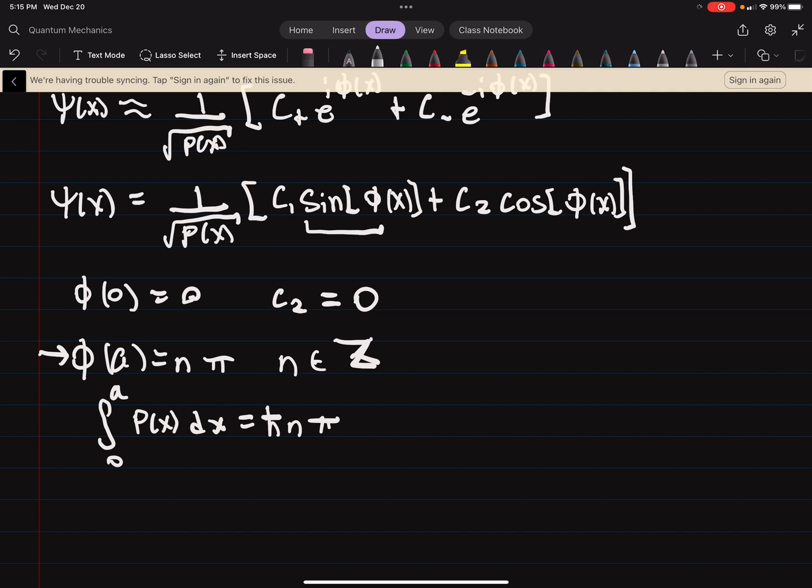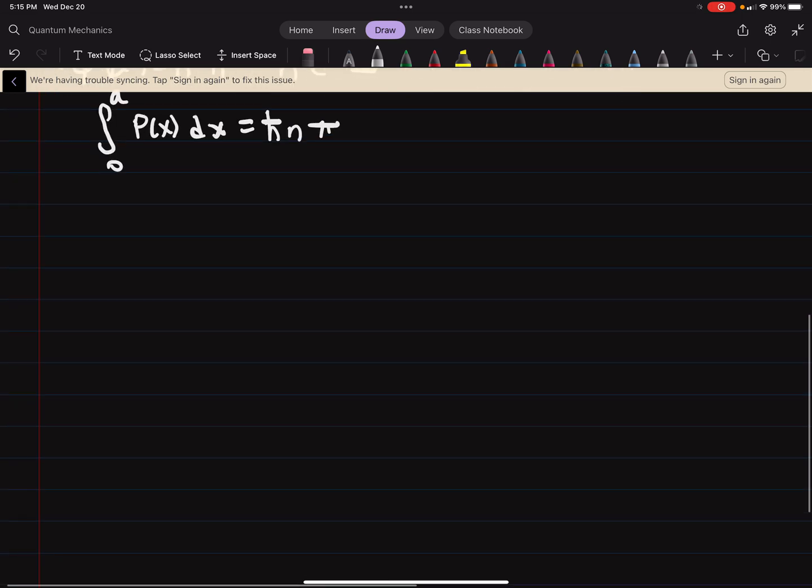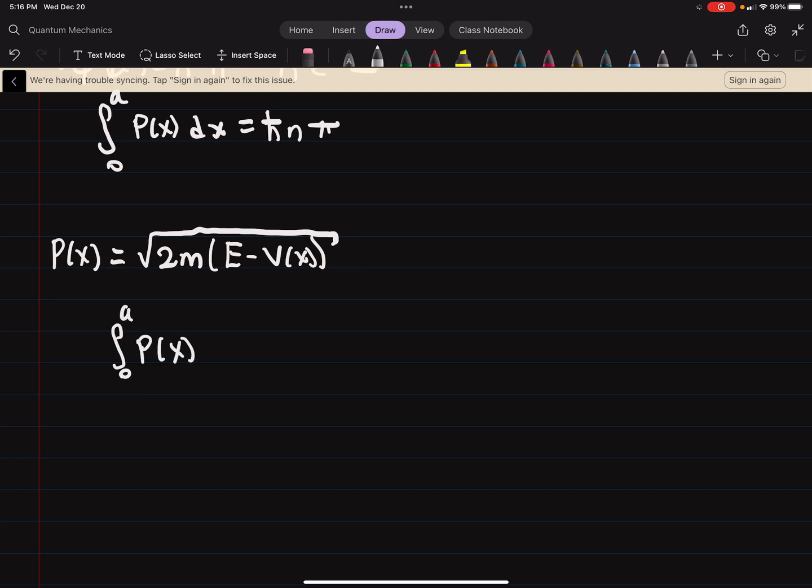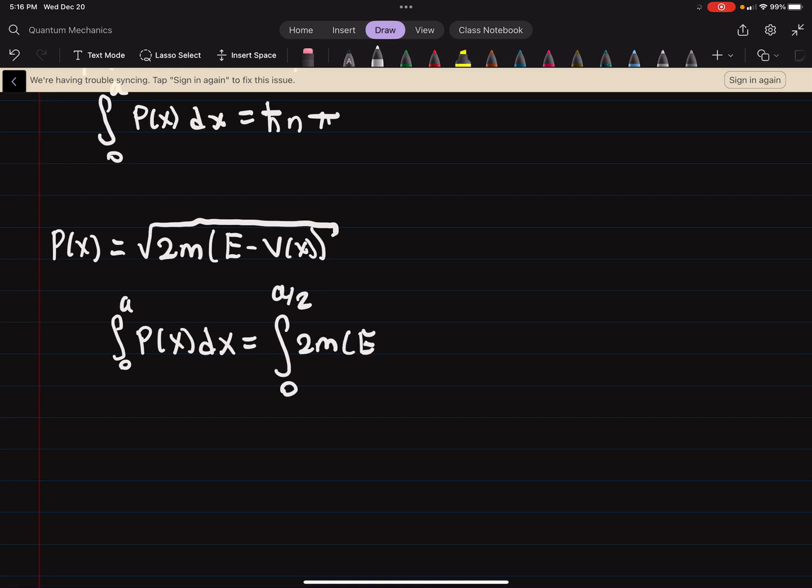A lot of this was explained in example 9.1, I just wanted to talk about it because we're now going to apply it to problem 9.1. P(x) is the square root of 2m times E minus our potential, which is varying here. That's a big part of the WKB approximation. Our potential is varying and we need to write the integral from 0 to A of P(x) dx.